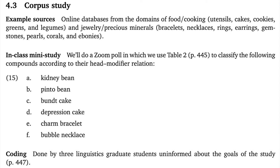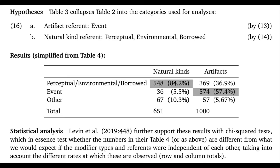The work itself was done by three linguistics graduate students who were uninformed about the goals of the study. For the purposes of the study, we do a simple operationalization of the core hypotheses: compounds referring to artifacts should have event modifiers, and compounds referring to natural kinds should have perceptual, environmental, or borrowed modifiers. In this table, I've given a slightly simplified view of the results. Overall, these results very clearly align with the core hypotheses. For example, 84.2% of natural kind compounds have essence-related modifiers, and 57.9% of artifact compounds have event-related modifiers.